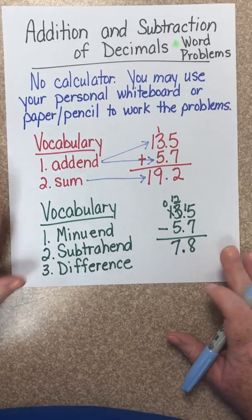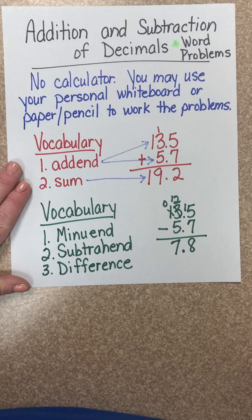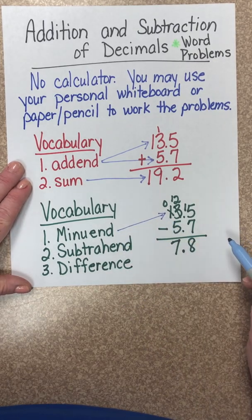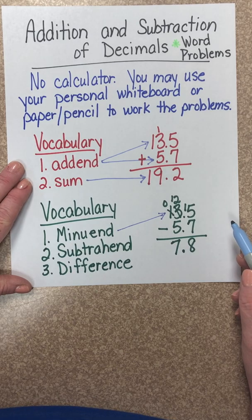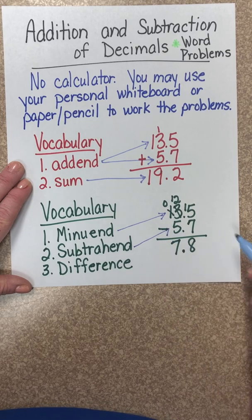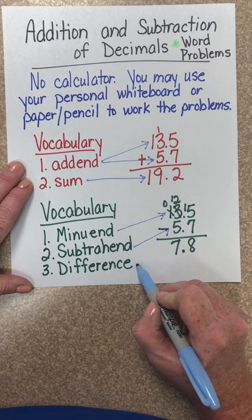Now let's look at vocabulary for subtraction. The first number in a subtraction problem is the minuend. The second number in a subtraction problem is the subtrahend. The answer to subtraction is the difference.